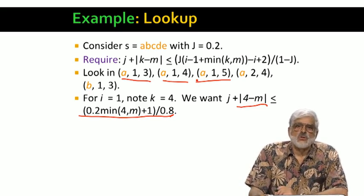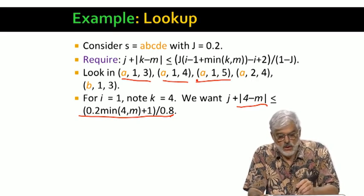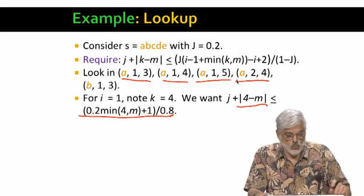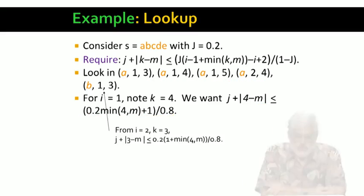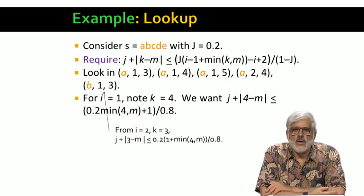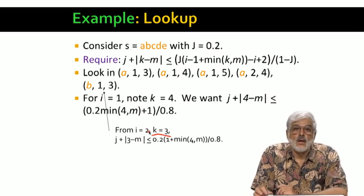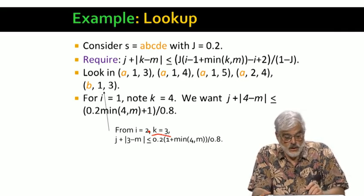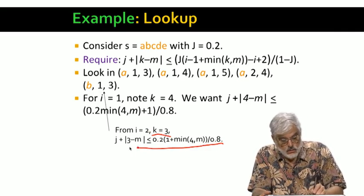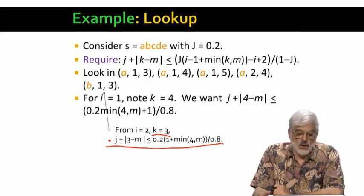Then consider J equals two. Now it turns out that M must be exactly four in order to make the magnitude of four minus M small enough. So we get only this bucket for J equals two. There is one more bucket, B, one, three. This comes from the second position of string S, which holds symbol B. When I equals two, we have K, the suffix length equal to three. And here's what the inequality becomes. It turns out that we have only one way to satisfy it. J has to be one, and M has to be three.